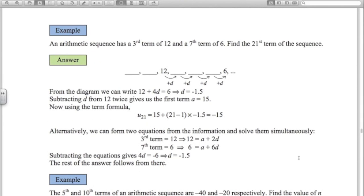This next example is a common one. We've got the third term and seventh term of an arithmetic progression. It's really good to write out a little diagram like I have here. 1, 2, third term is 12, third, fourth, fifth, sixth, seventh term is 6.